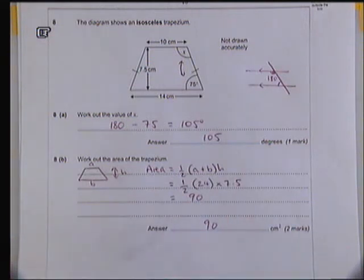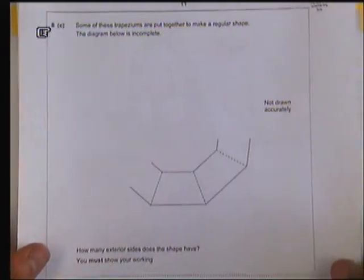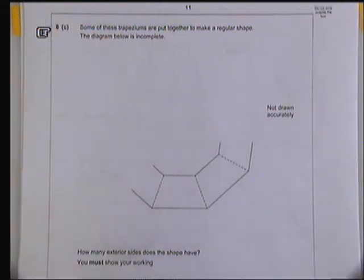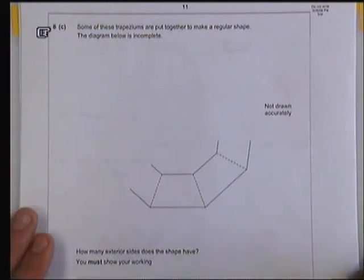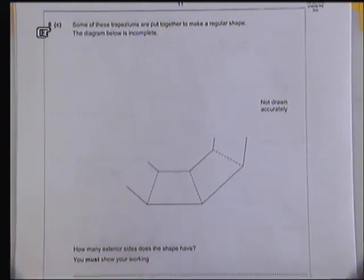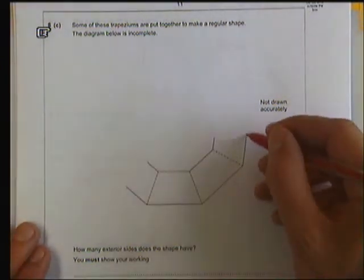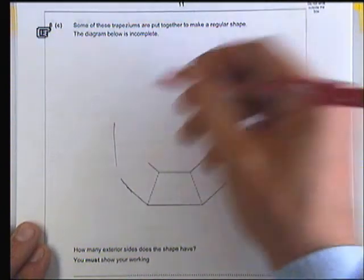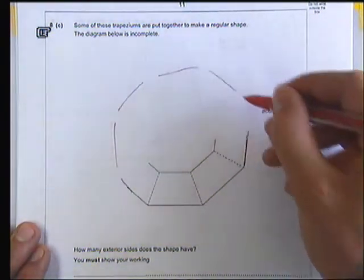Part C follows on the same concept using the same shape. It says some of the trapeziums are put together to make a regular shape. The diagram below is incomplete. How many exterior sides does the shape have? So we're imagining continuing this shape around somehow to make a closed loop.